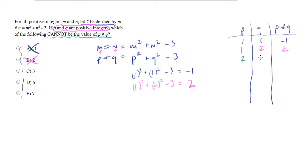Let's try plugging in a couple more. Let's try plugging in two and one. Two squared plus one squared minus three equals two again. Okay, that doesn't help so much.